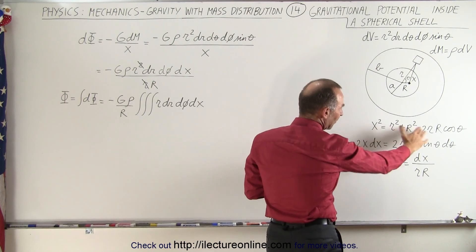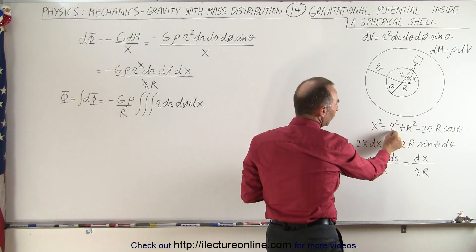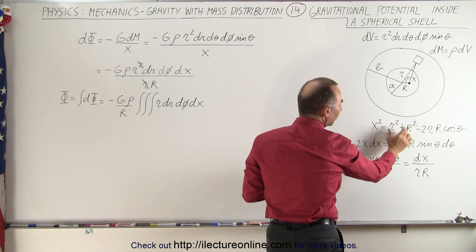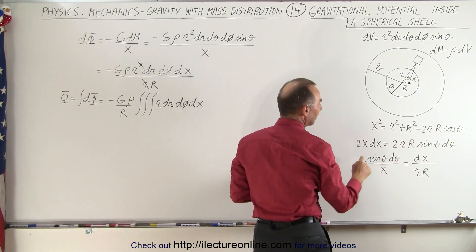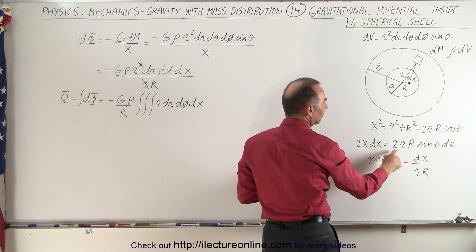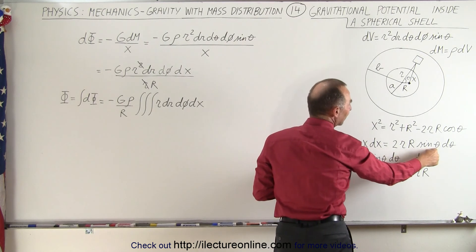Now when we take the derivative of both sides, assuming that little r and big R are constant, we're only going to assume x to be the variable and theta to be the variable, then you can see you get 2x dx is equal to 2rR sine of theta d theta.